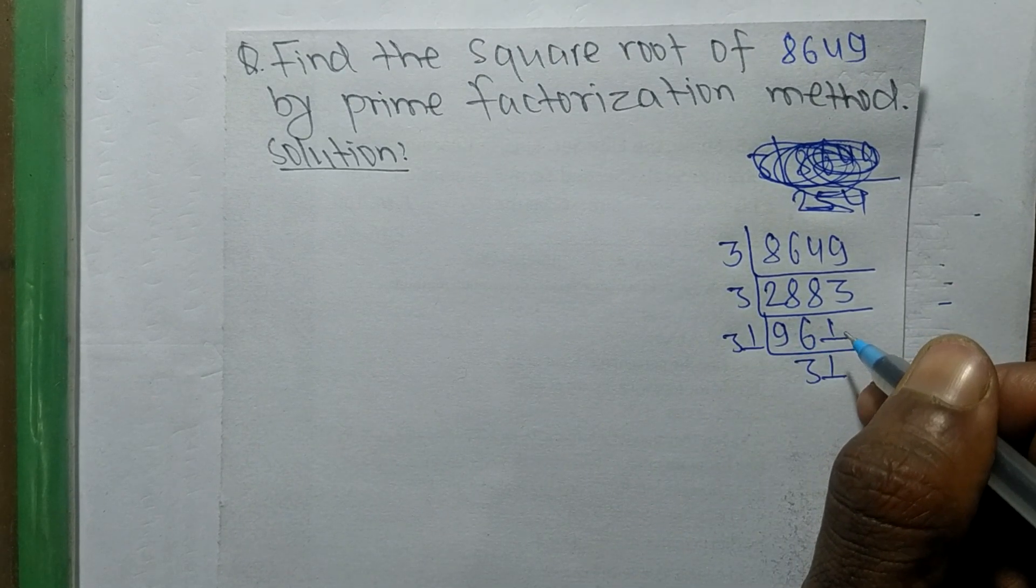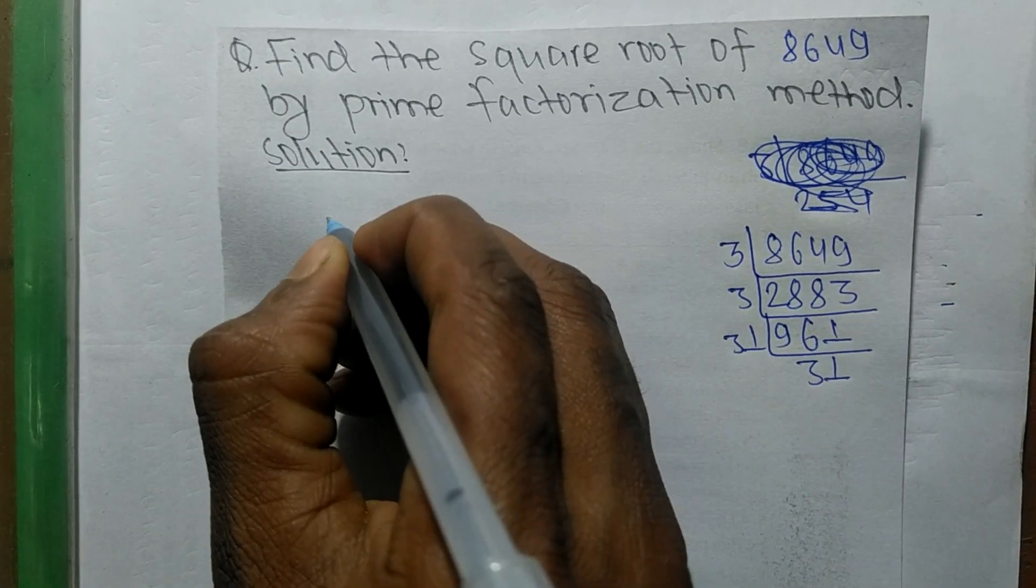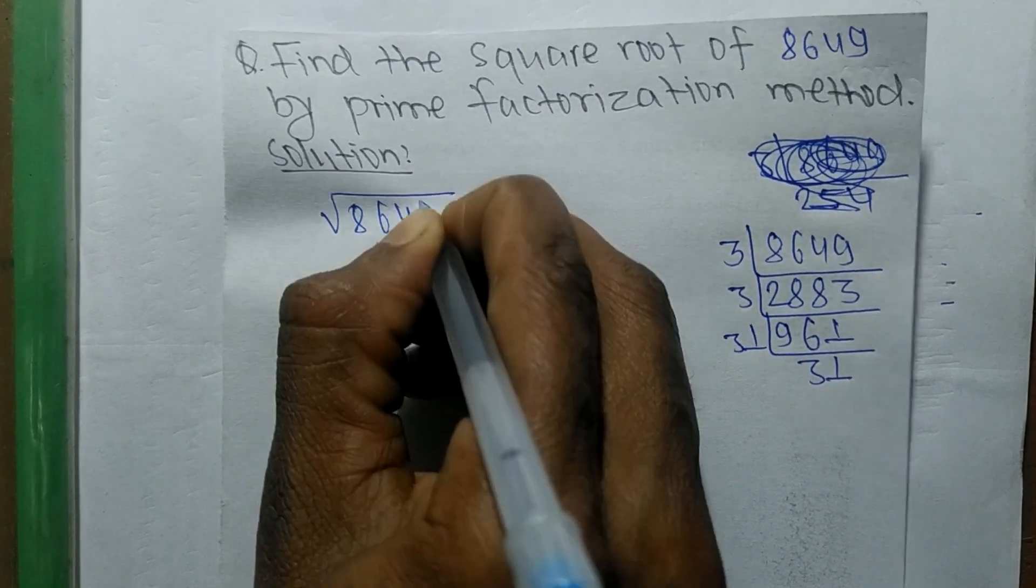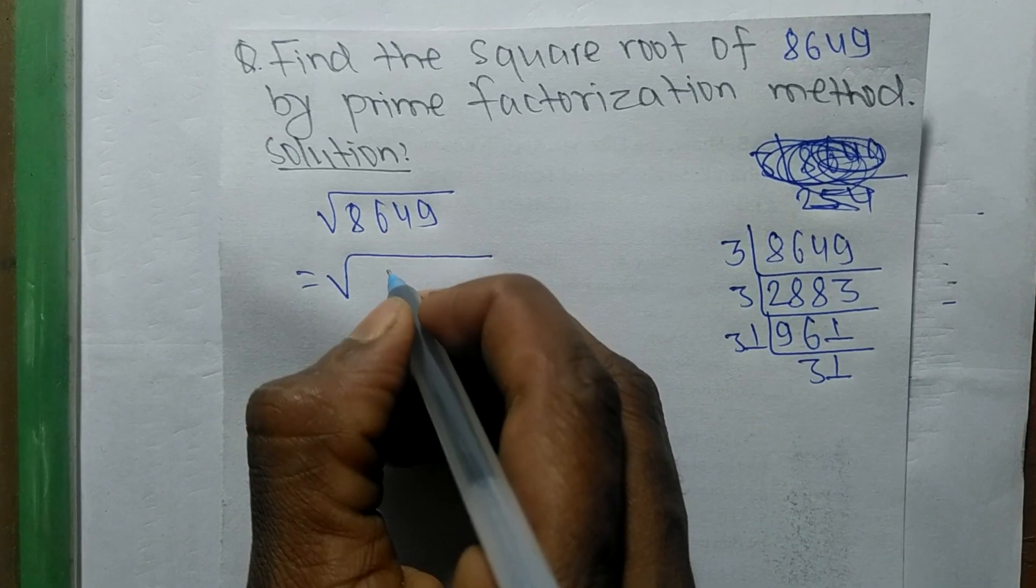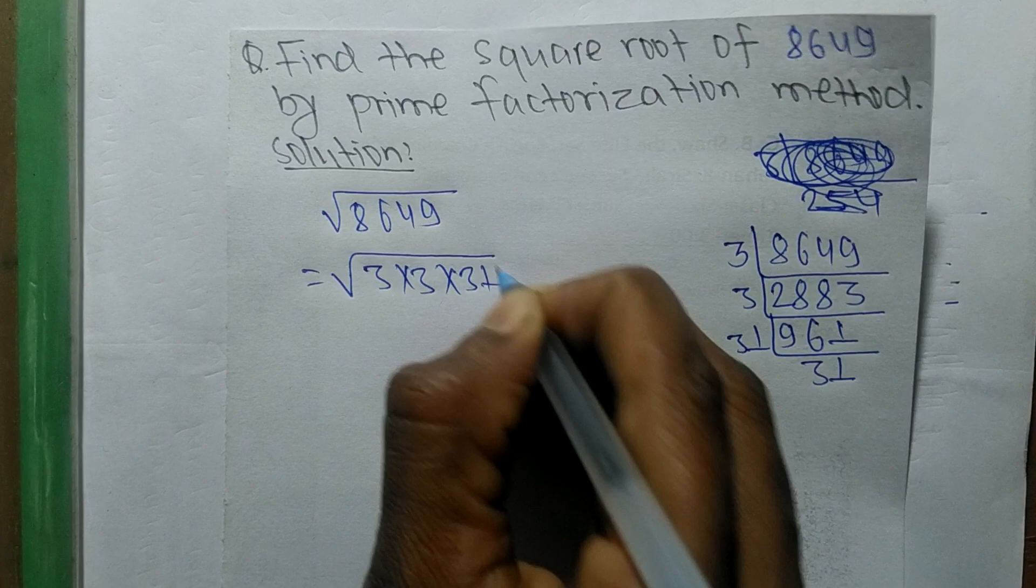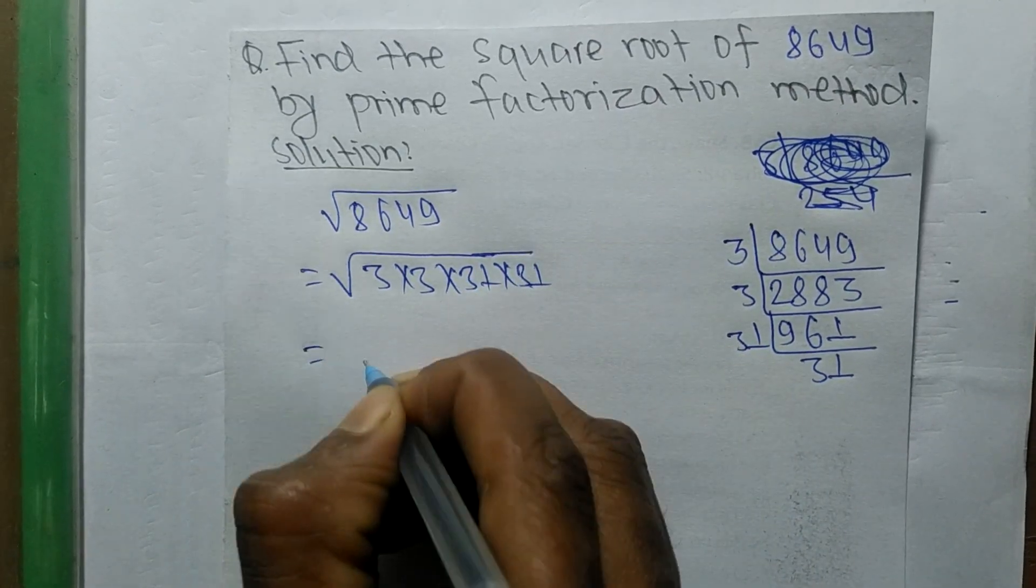So after finding out prime factors, now we find the square root. So the square root of 8649, from the prime factors we can write 3 into 3, 31 into 31.